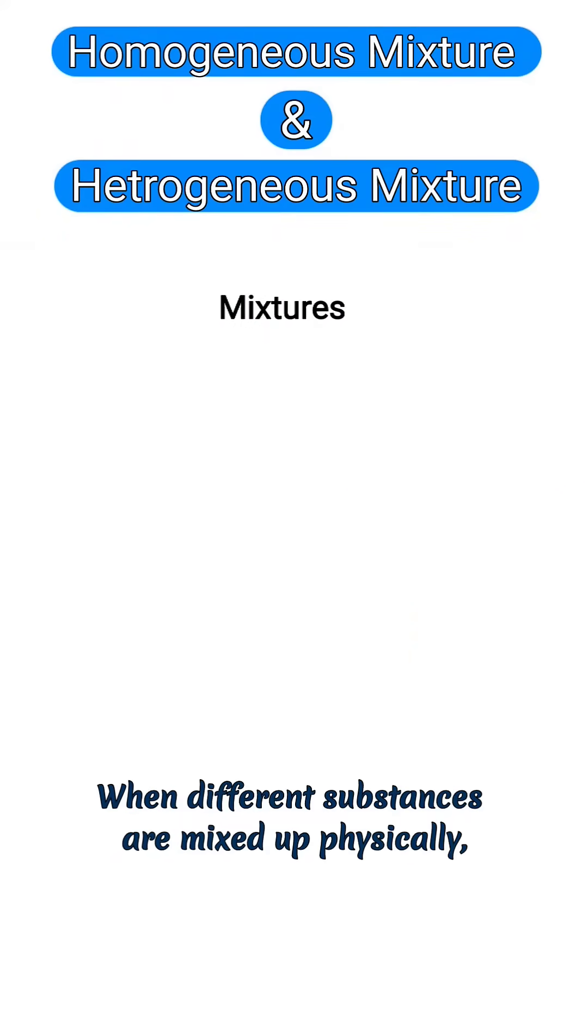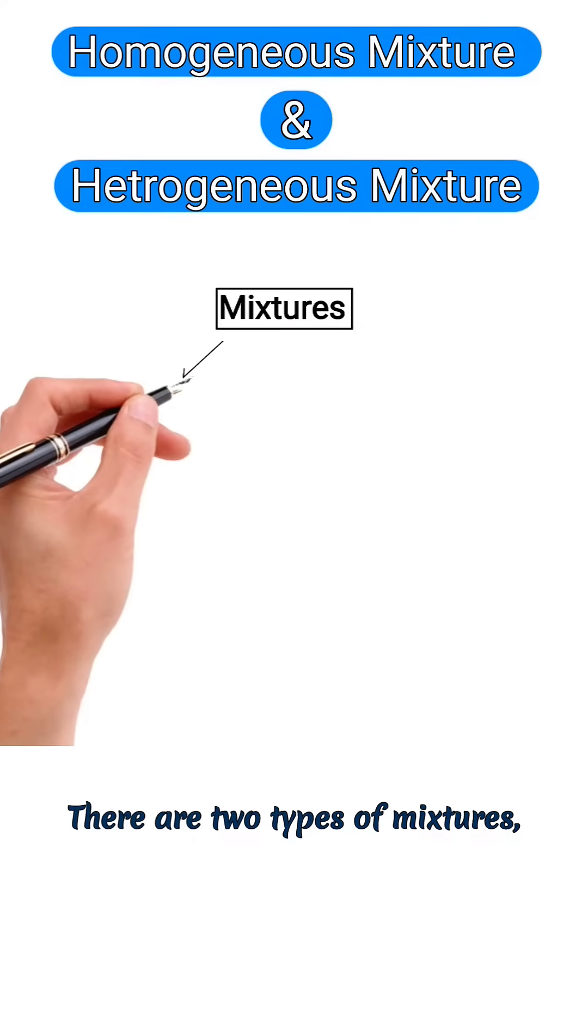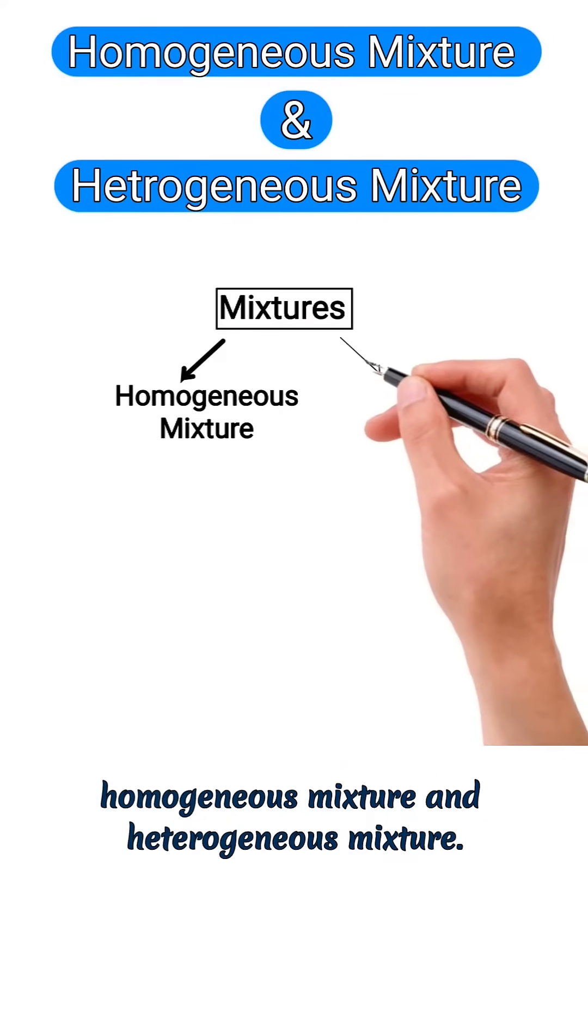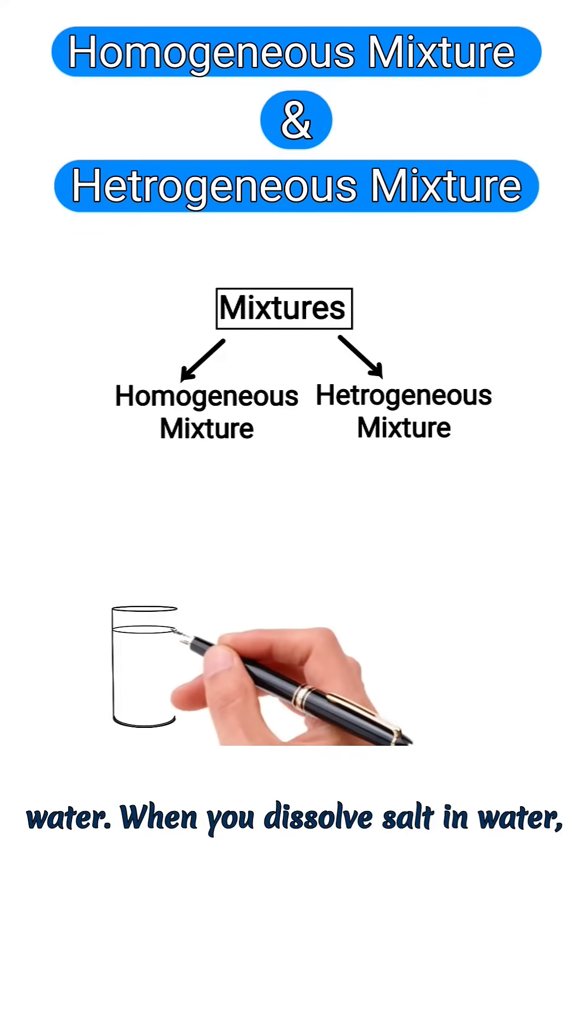Let me define mixture. When different substances are mixed up physically, then the matter is known as a mixture. There are two types of mixtures: homogeneous mixture and heterogeneous mixture. We take an example of salt water. When you dissolve